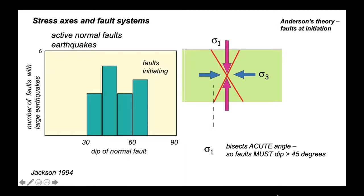We can interpret the steeper dips as the faults at initiation, and maybe the shallower dips down to 30 degrees represent faults as they die. So faults are changing their dip as they develop displacement.